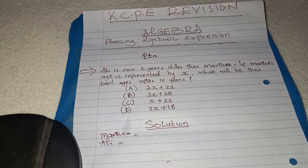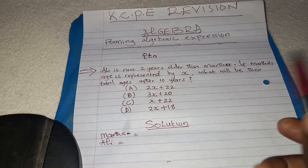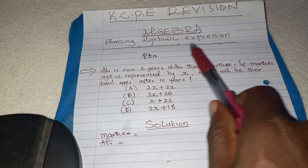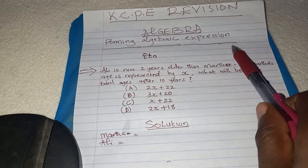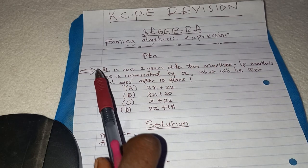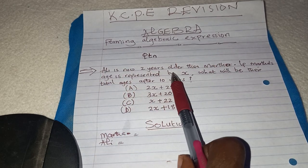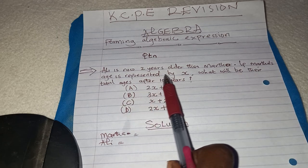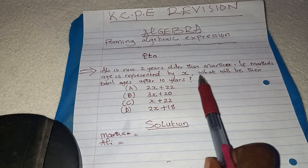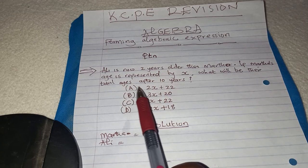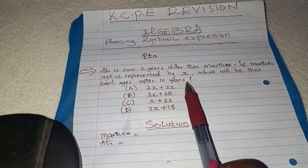Good morning, candidate. Welcome to our revision today. We are revising on algebra — forming algebraic expressions. The question says: Ali is now two years older than mother. If mother's age is represented by X, what will be their total ages after 10 years?